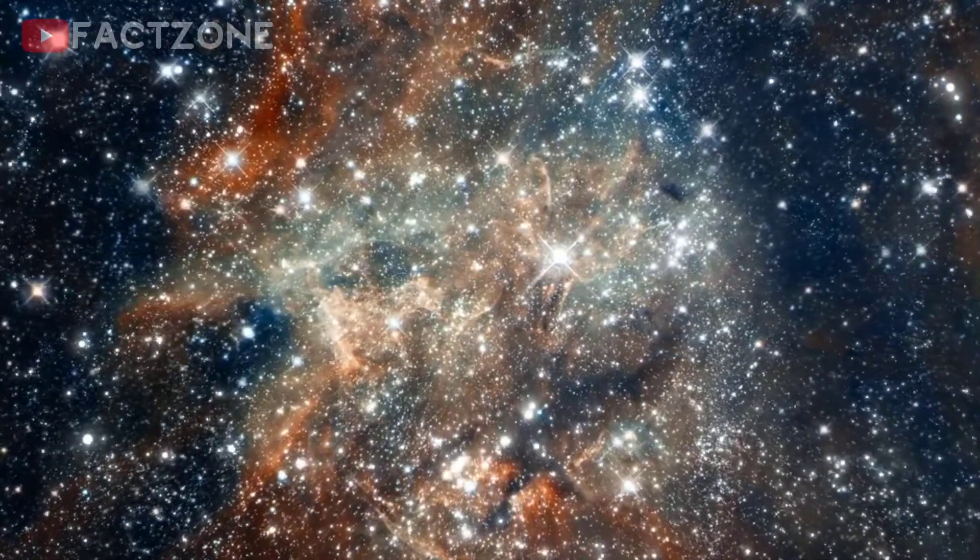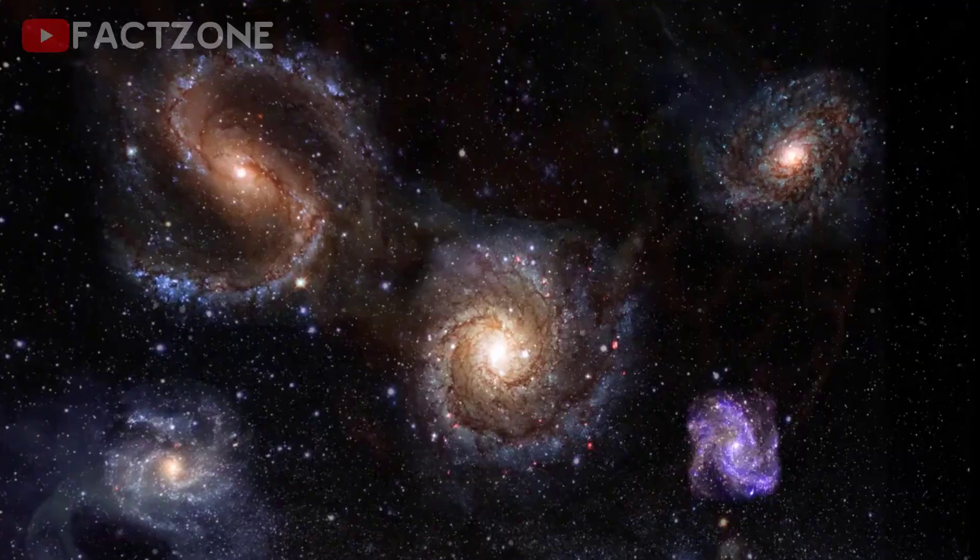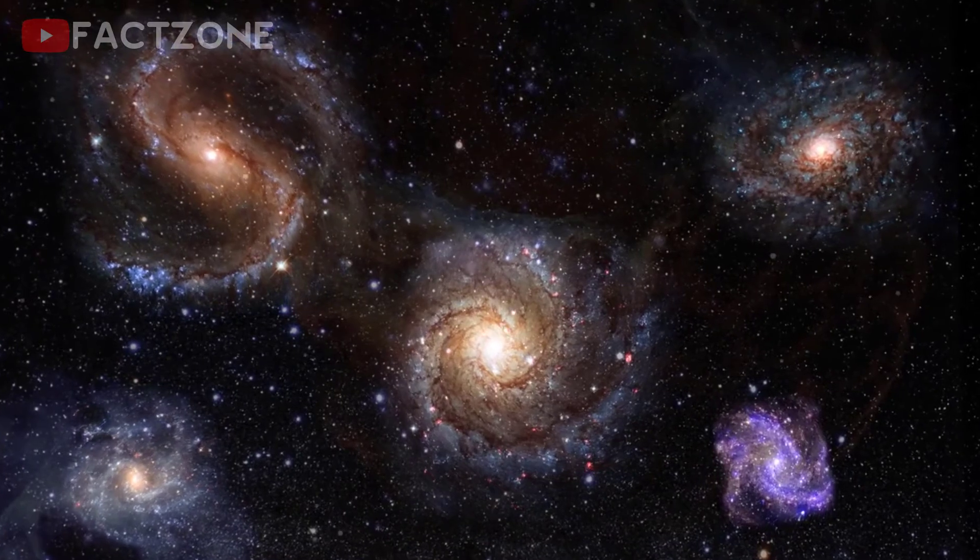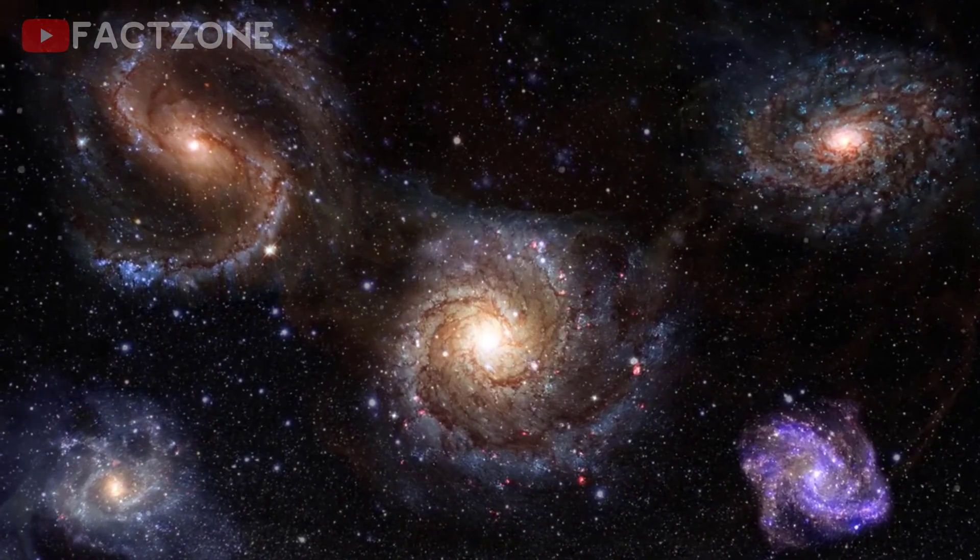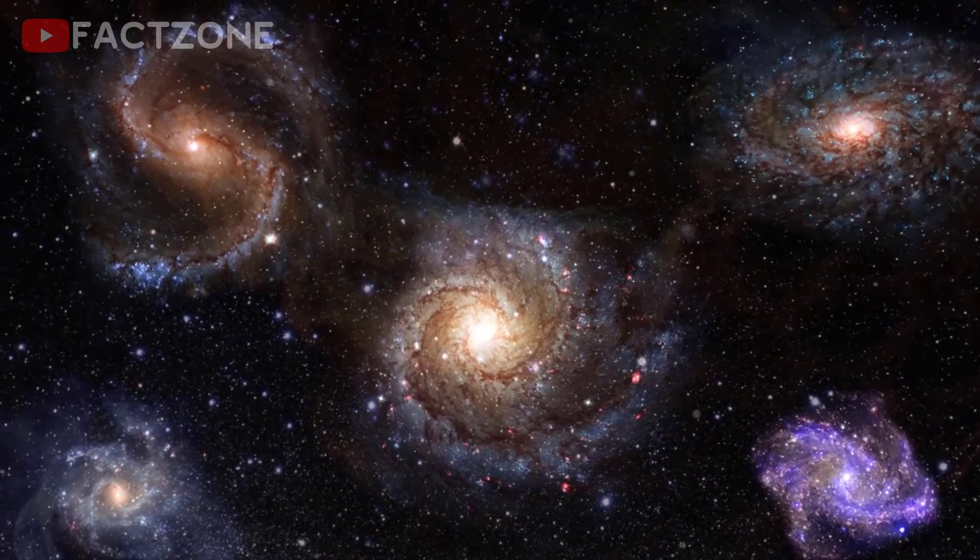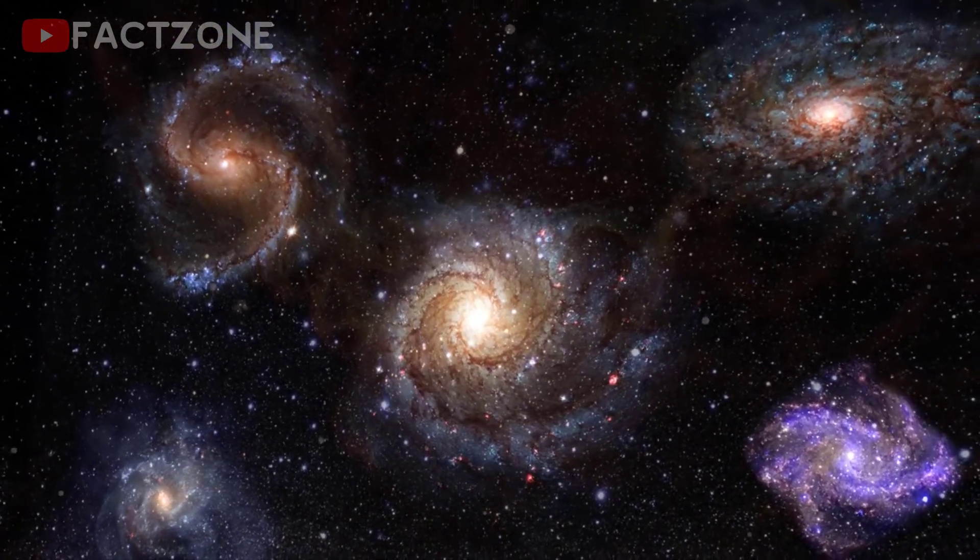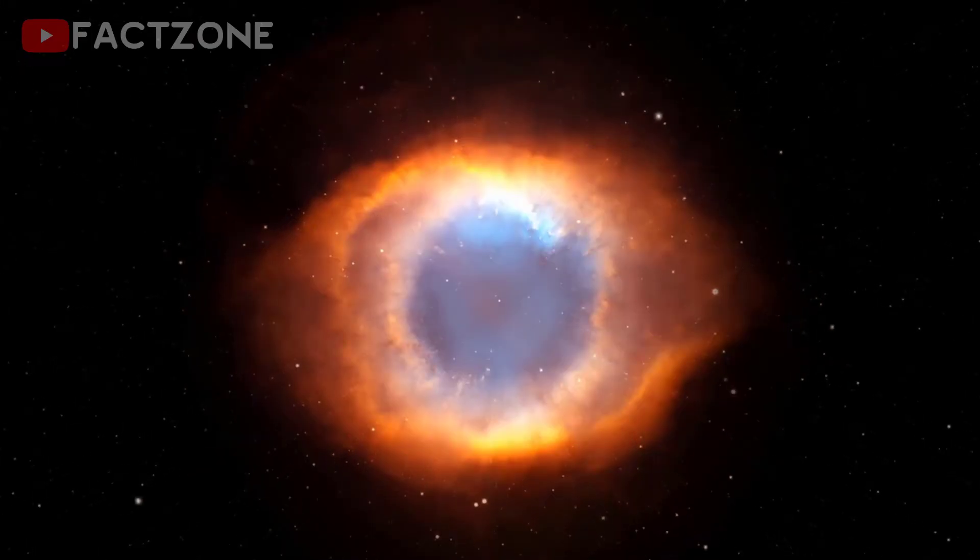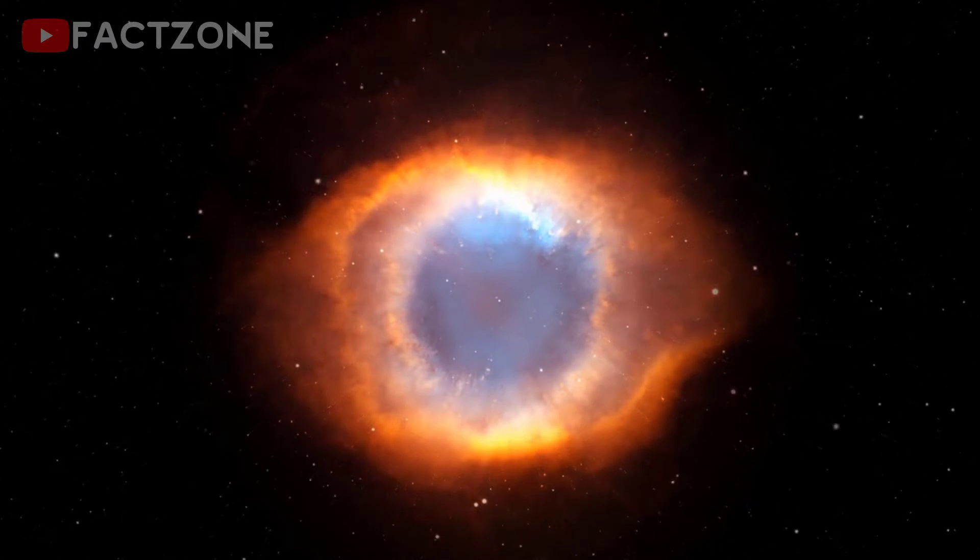The European Space Agency Planck satellite found that dark matter accounts for 26.8% of the mass energy of the universe compared with the 4.5% of normal, atomic matter. It therefore outweighs the visible stars in galaxies by a factor of about 6.